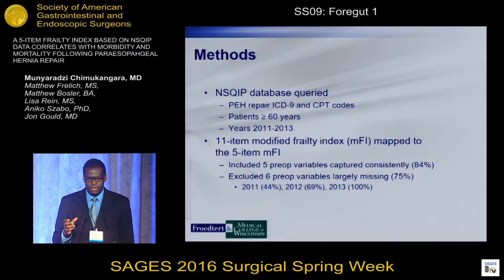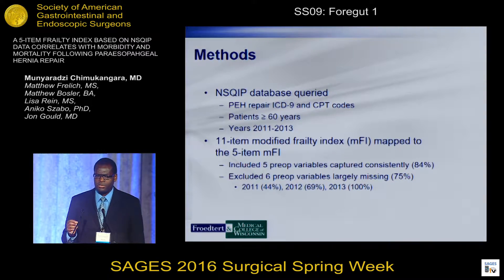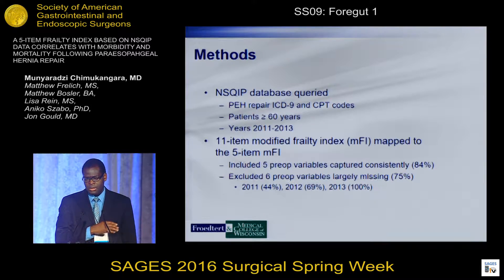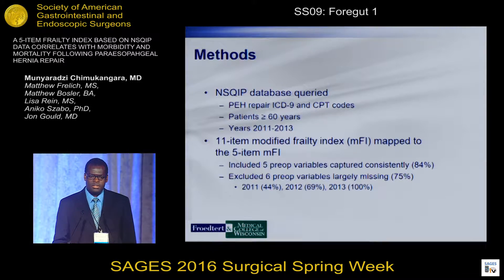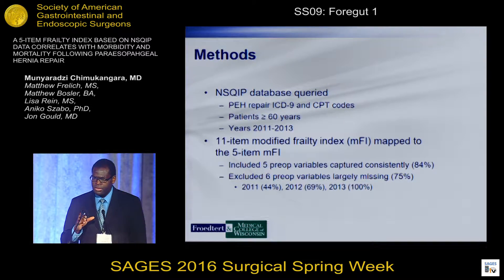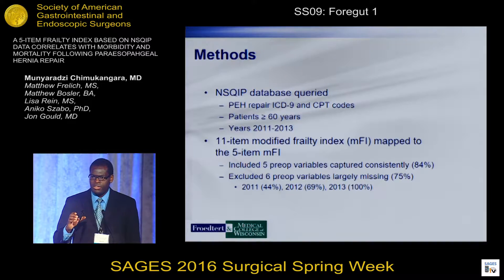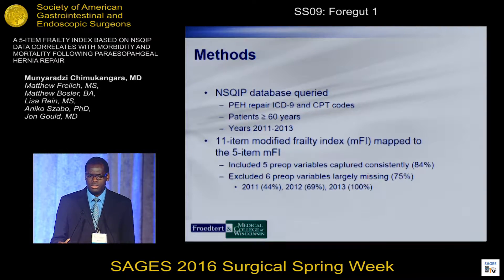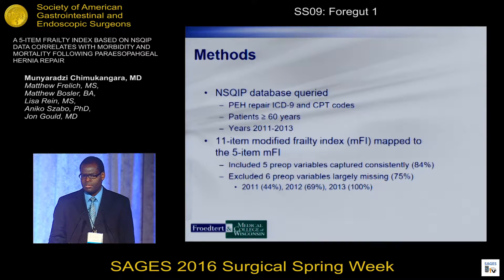We created the NSQIP dataset looking at the most recent file, 2011 to 2013, focusing on patients 60 years or greater that had undergone paraesophageal hernia repair. The 11-item frailty index from our previous paper was mapped to a new condensed 5-item frailty index. We included five variables out of those 11 that were consistently captured by NSQIP data — 84 percent of the time — while the six excluded variables were those that were largely missing.